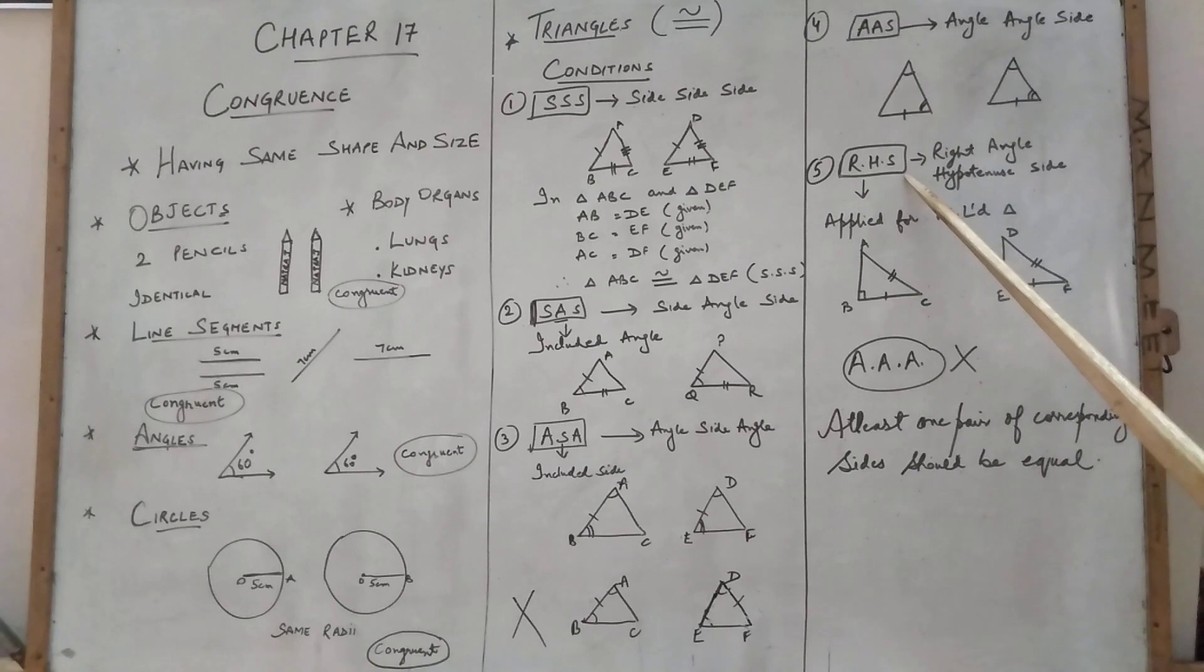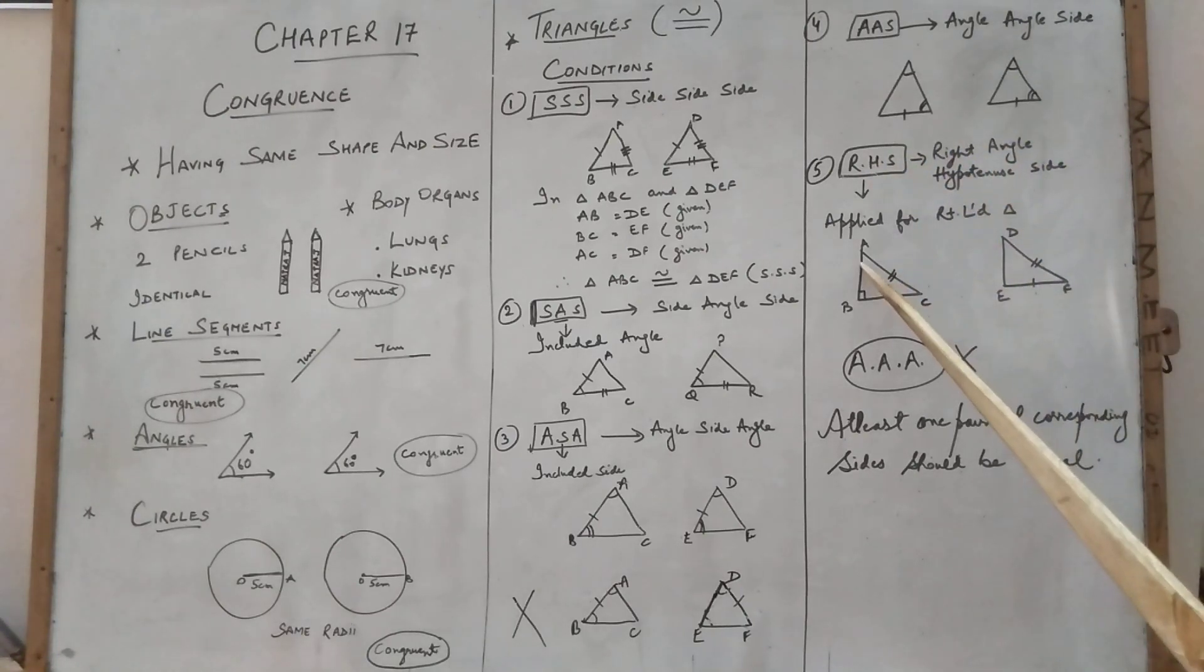Next is RHS. RHS means, first of all children this is applied for right angle triangles. Right angle triangle is a triangle which is having one angle right, 90 degree. So R means right angle, H means hypotenuse. This is the longest side of the triangle, hypotenuse. And any one side.